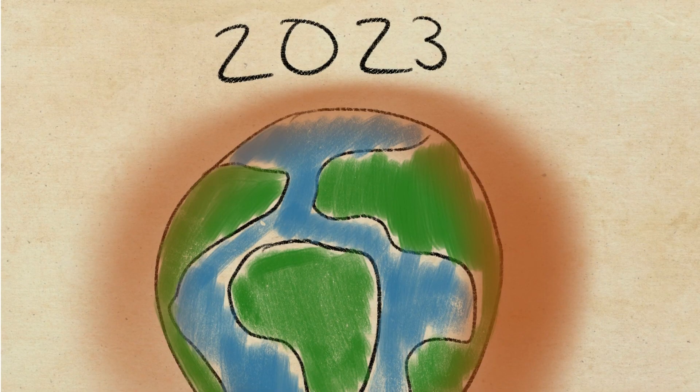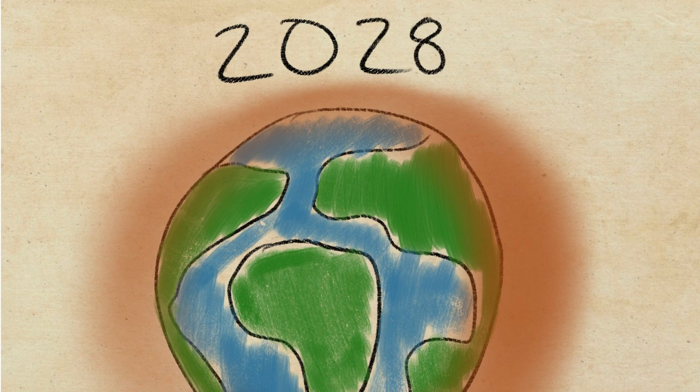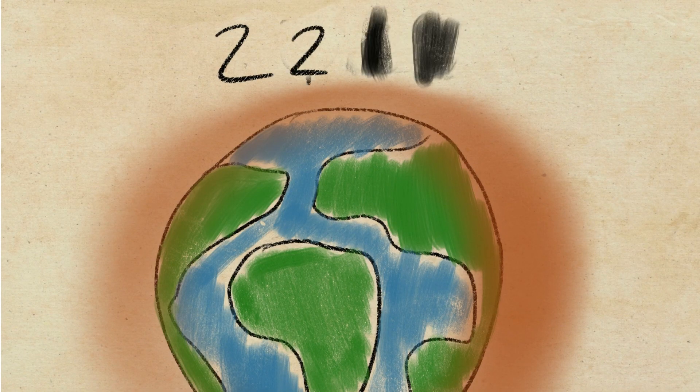Depending on the type, greenhouse gases can stay in the atmosphere for a few years or even for thousands of years.